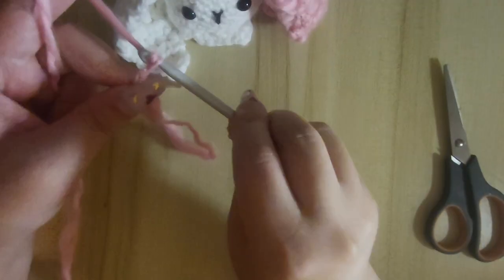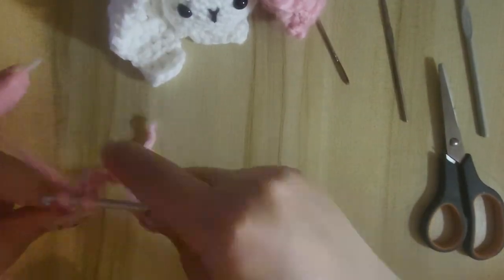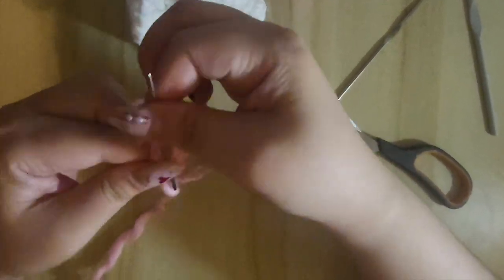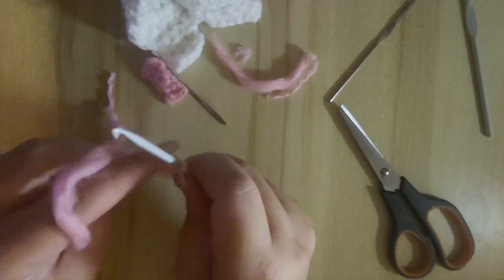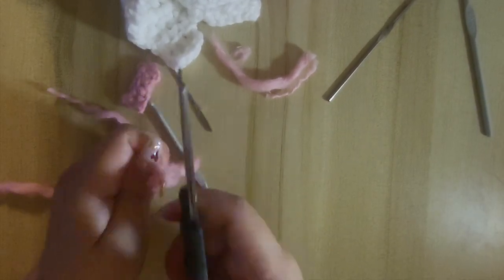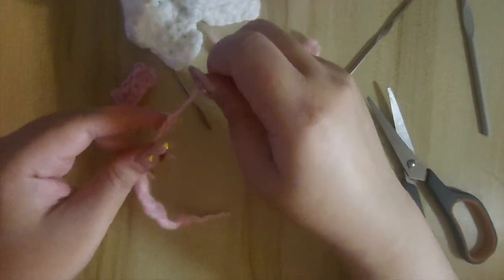Once done, I make the ribbon next. With the ribbon, I only need to do four stitches as it will be too big otherwise. Once I finish, I attach it to the left ear.